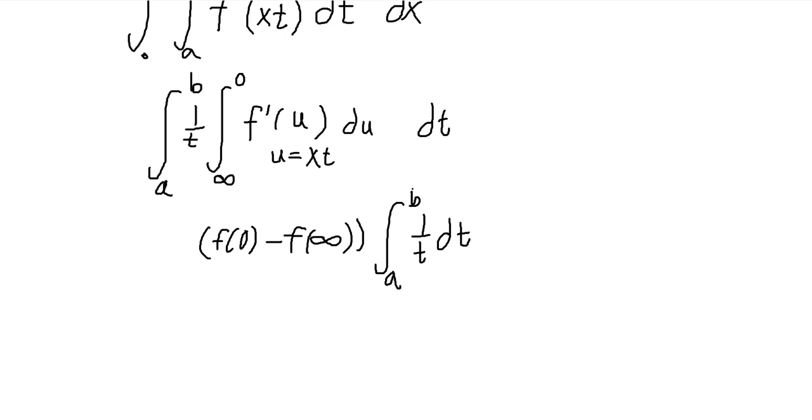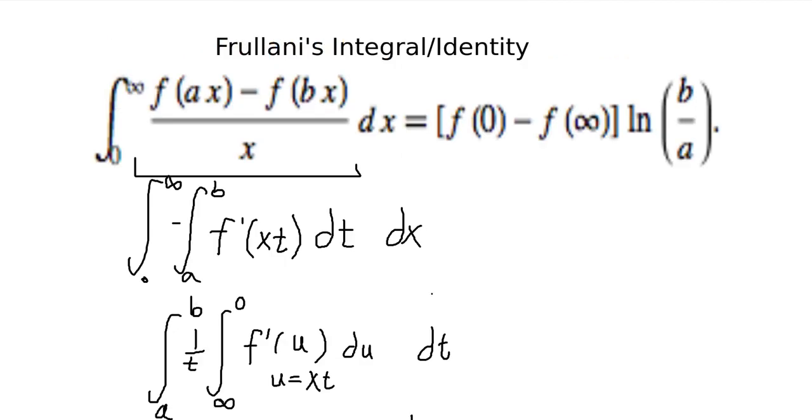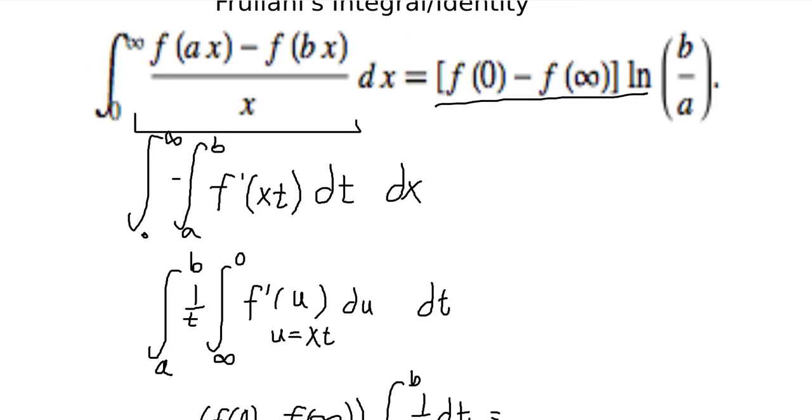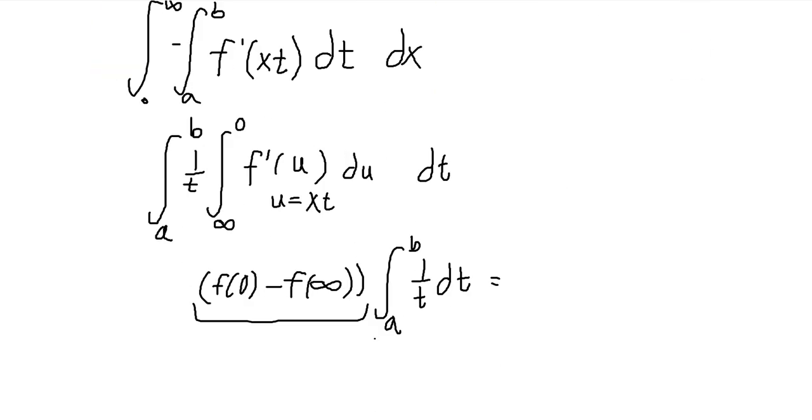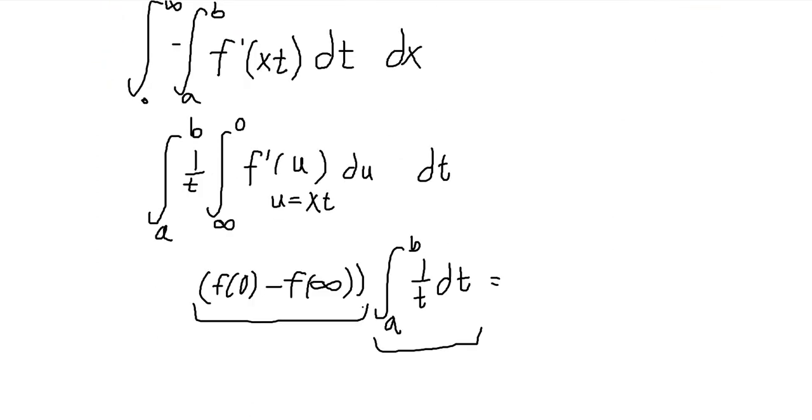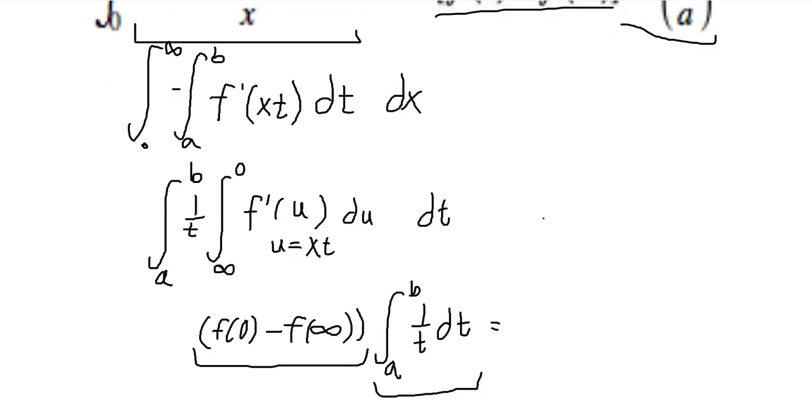It'll be natural log of t evaluated from a to b. So natural log of b minus natural log of a. And we can bring that sort of inside, or you can combine the natural logs. And it'll be just the natural log of b over a. So this part stays the same. This part's right here. And then this integral evaluates to the second piece, natural log of b over a. Because you get natural log of b minus natural log of a.